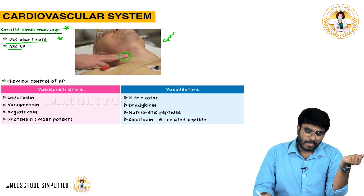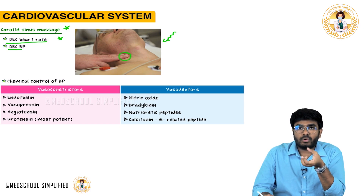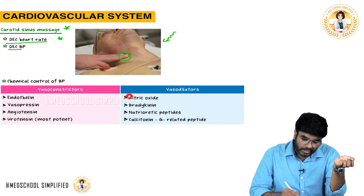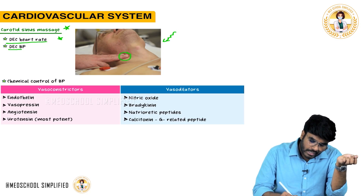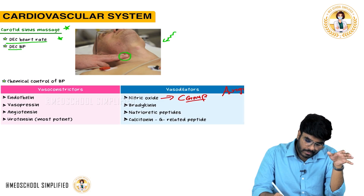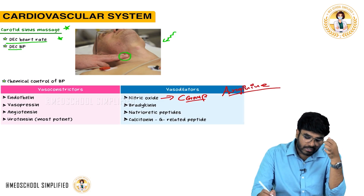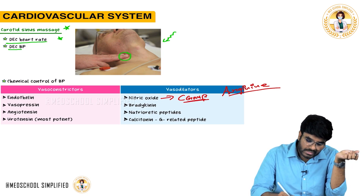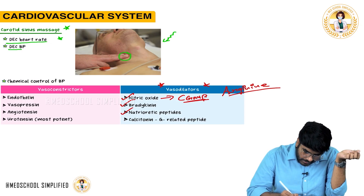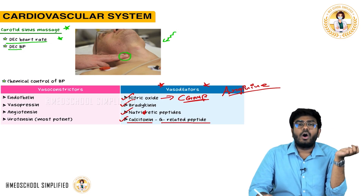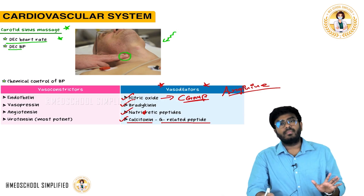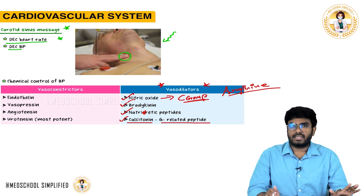Vasodilators cause vasodilation and automatically decrease BP. Important vasodilators include nitric oxide — an important MCQ topic: nitric oxide uses cyclic GMP as its secondary messenger and is derived from the amino acid arginine. Other vasodilators include bradykinin and natriuretic peptides. These can all decrease BP.